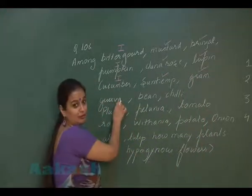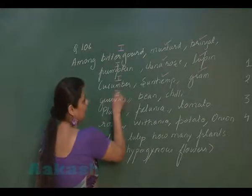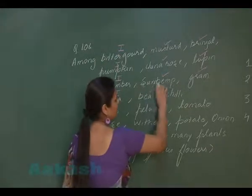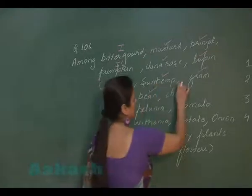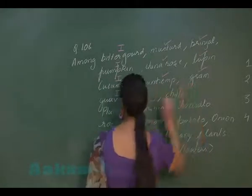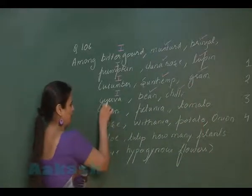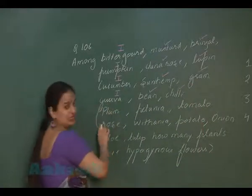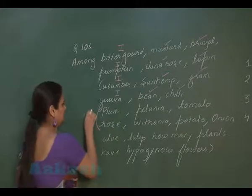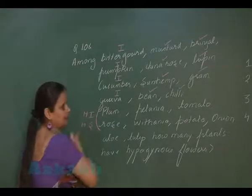Guava belongs to the Myrtaceae family — inferior gynoecium. Bean — Fabaceae — superior. Chili — Solanaceae — superior. Now, plum and rose — in both of these, the condition is half inferior. You can say, half superior.